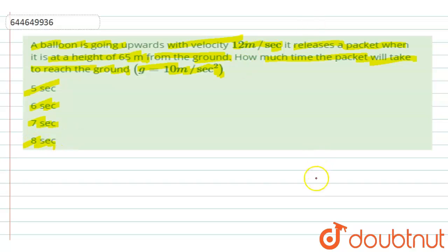So basically we are given, let's say this to be the ground level, and we are having a balloon which is going upward with a velocity of 20 meter per second, and at a height of 65 meters from the ground.